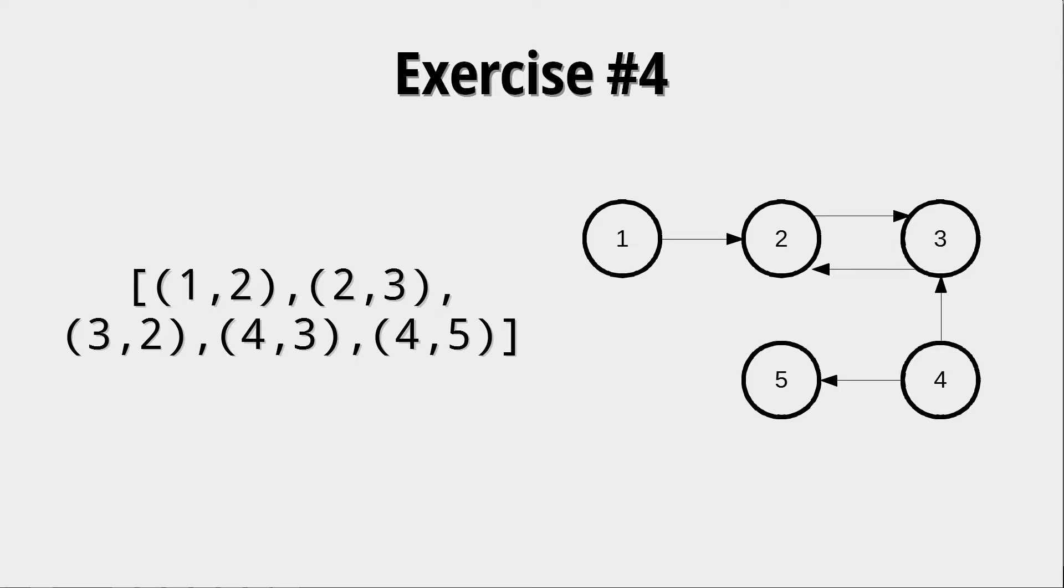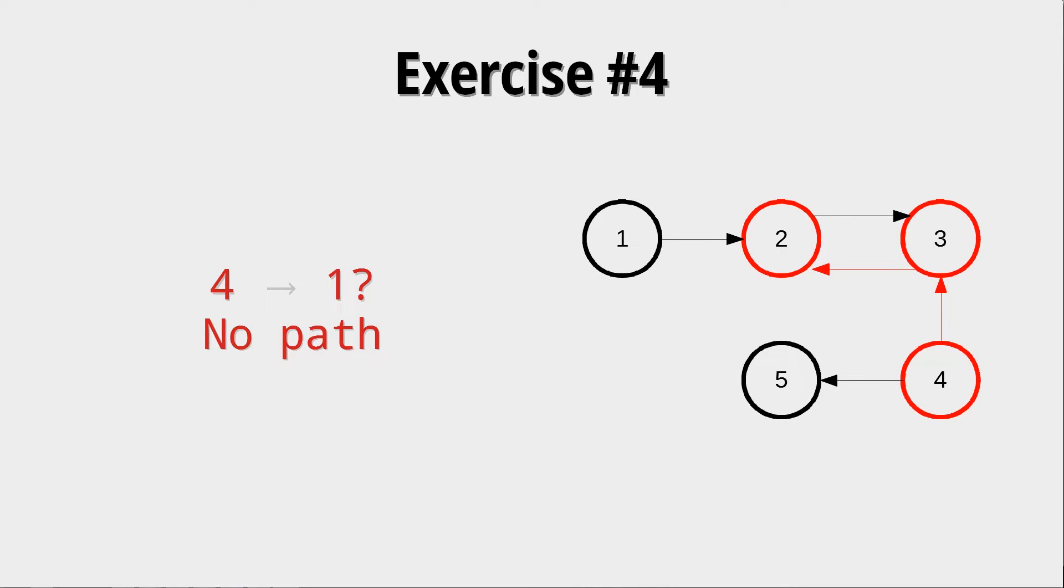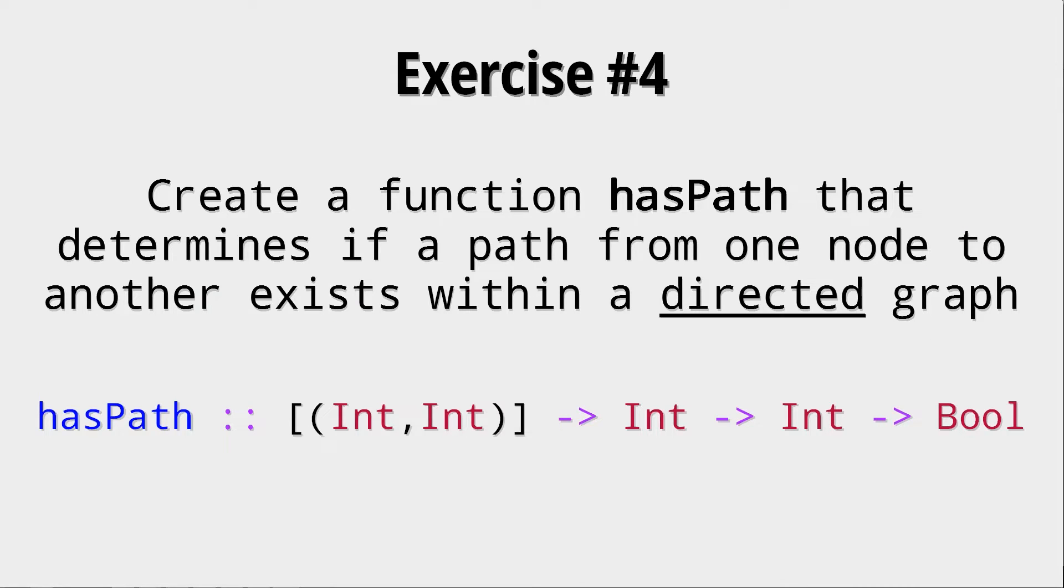For the last exercise we want to look at directed graphs. Those directed graphs are encoded as a list of int tuples. For example we have a list with the tuple 1, 2 in it. This means that we have the nodes 1 and 2 and we have a directed edge going from 1 to 2. For this exercise we implicitly think of a graph that has all the nodes in it that exist. We are interested in paths. Does there exist a path going from 1 to 3? In this case yes it does. Does there exist a path going from 4 to 2? Yes it does. But there is no path going from 4 to 1 since the only edge connecting 1 and 2 has the wrong direction.